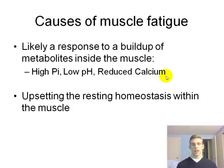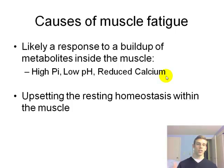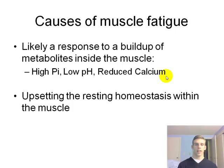On the molecular side, metabolites can be altered and cause fatigue. High phosphate molecules and low pH reduce calcium sensitivity — these can all cause fatigue. This is actually what my lab works on with Dr. DeBolt. We look at high PI and low pH, and how these ions affect myosin's function on the molecular level.